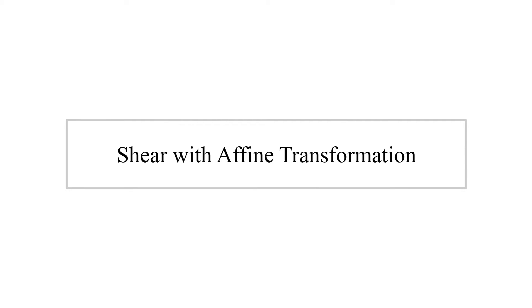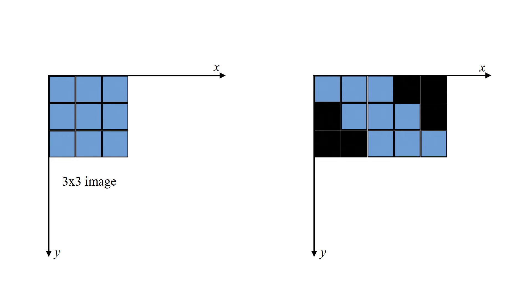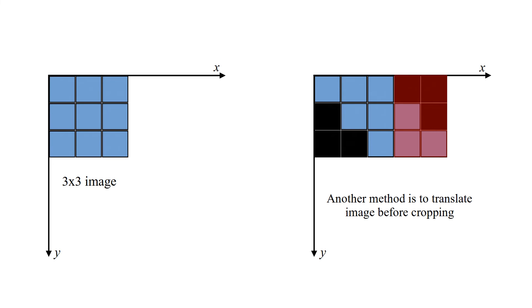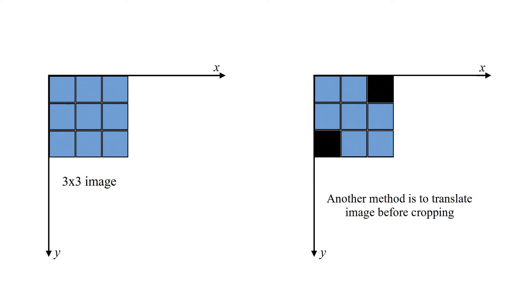Shear with affine transformation. These are a 3 by 3 image and its transformed version after applying horizontal shear. With cropping, some image pixels are lost. Another method is to translate the image before cropping — first the image is centered, and then cropped.